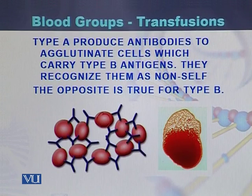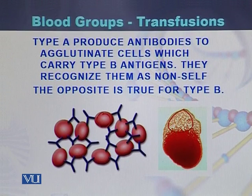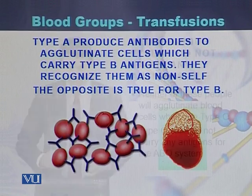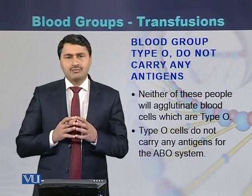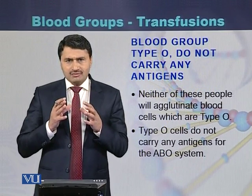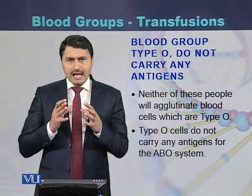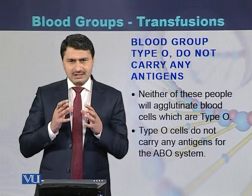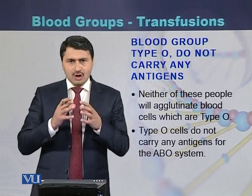Similarly, in the case of type B, the other blood group antigens are recognized as non-self. In this diagram we can see the agglutination that forms due to the reaction of antibodies and antigens present on the surface of red blood cells. Blood group O red blood cells do not carry any antigens on their surface.